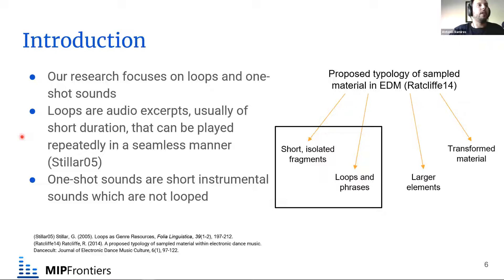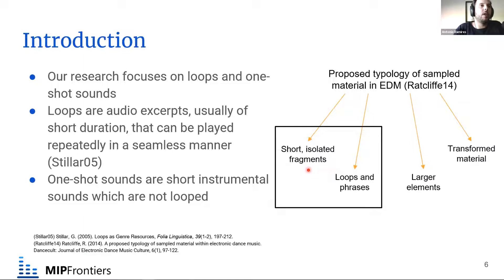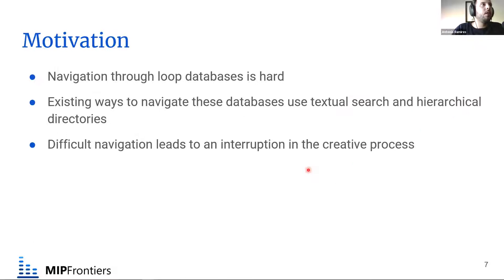A loop is an audio excerpt, usually of short duration, that can be played repeatedly in a seamless manner — you can duplicate it and the transition should be imperceptible, so it can repeat indefinitely. On the other hand, one-shot sounds are short instrumental sounds which are not loops — for example, a drum sound or a single note from a violin, which is then rearranged.